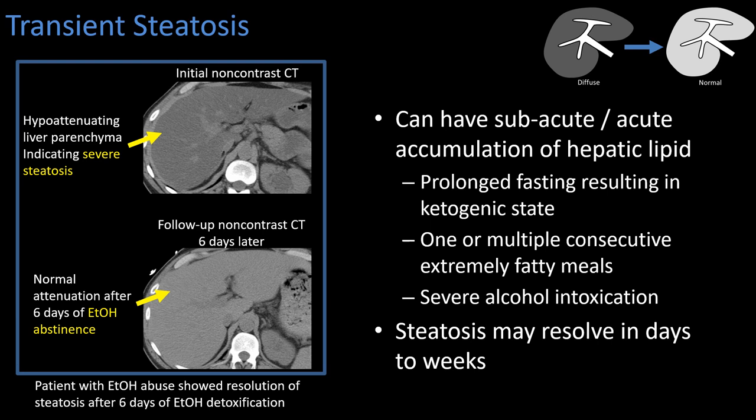Here we see an initial non-contrast CT in the setting of trauma for a patient who is acutely intoxicated. The liver is severely hypoattenuating relative to the spleen. A follow-up CT six days later shows normalization of the hepatic parenchyma — the patient had been admitted, had not had any alcohol for six days, and that steatosis resolved. It can be transient, which was relatively surprising to me when I first learned that.